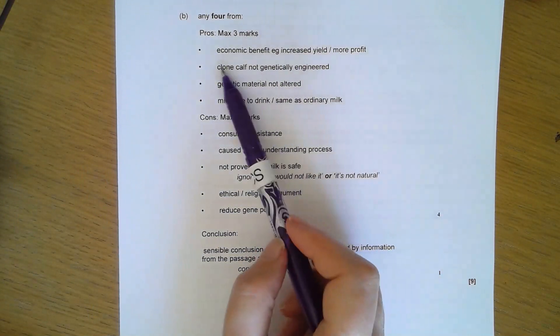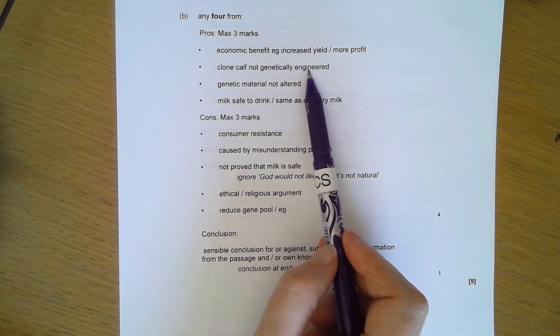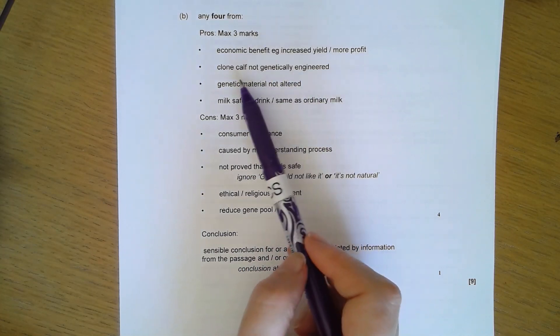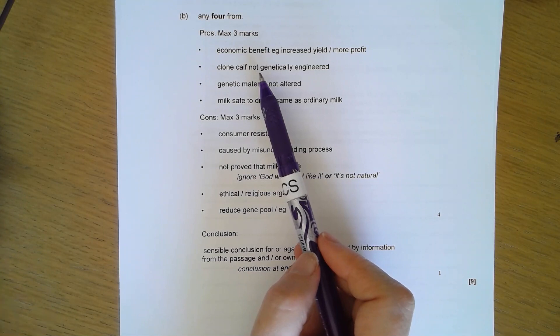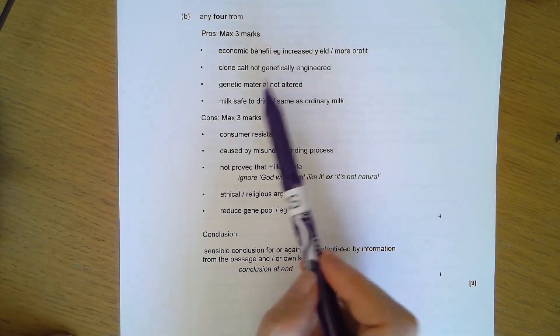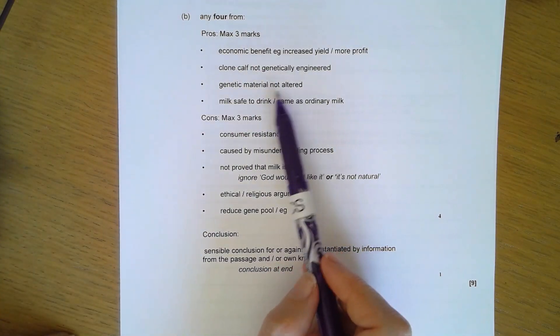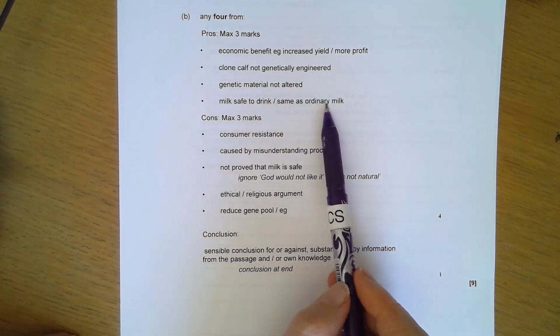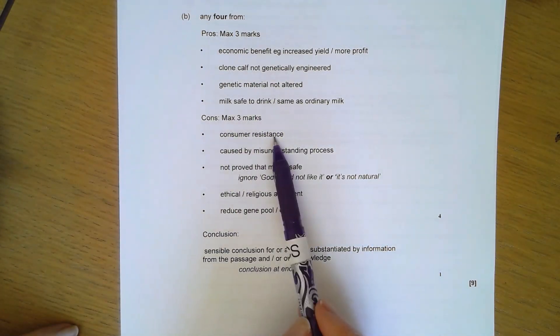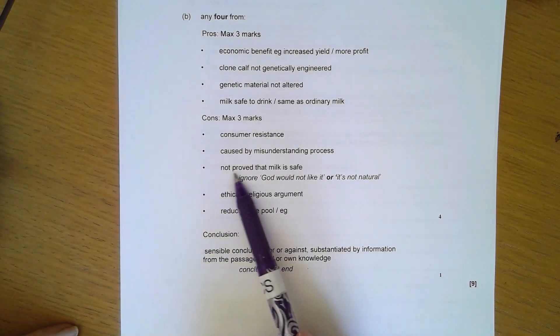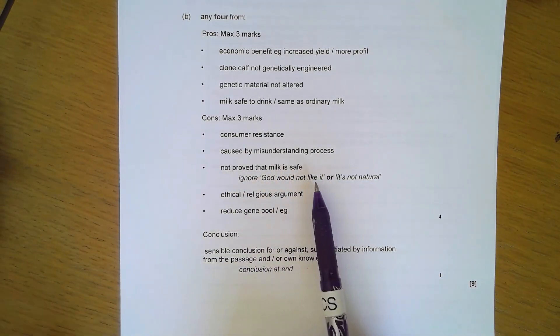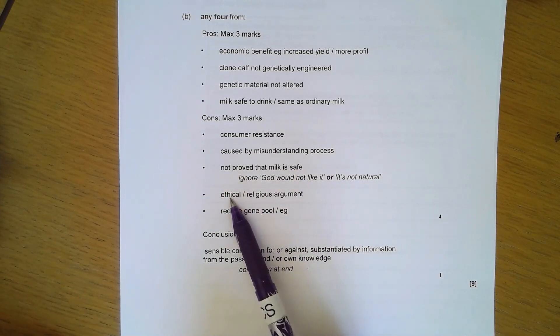You can get a maximum of three marks for the pros, three marks for the cons as a maximum, and then a mark for the conclusion. For pros: economic benefit, increased yield, more profit. The clone calf is not genetically engineered. The genetic material isn't altered. The milk's safe to drink, it's the same as ordinary milk. For cons: consumer resistance caused by misunderstanding the process. It's not been proved the milk is safe. You need to say there are ethical and religious arguments, use those terms.